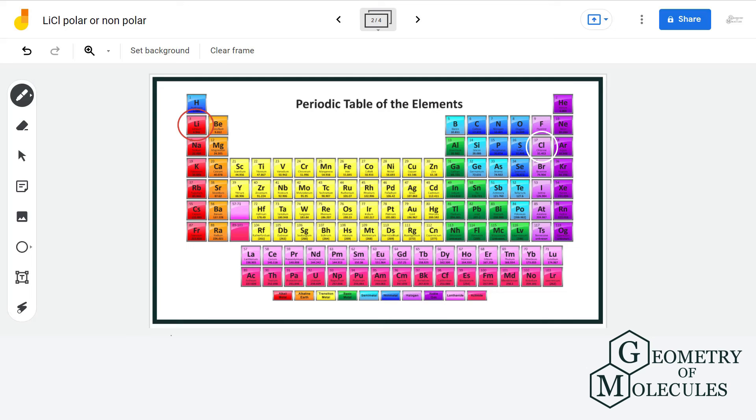When we look at the periodic table and calculate the polarity difference, it is higher than two, and compounds that exhibit such property are known as ionic compounds.